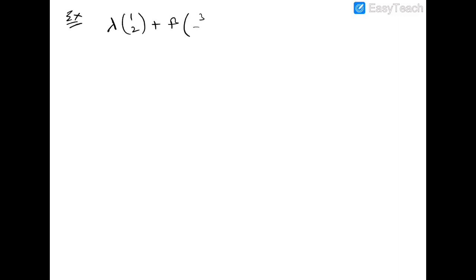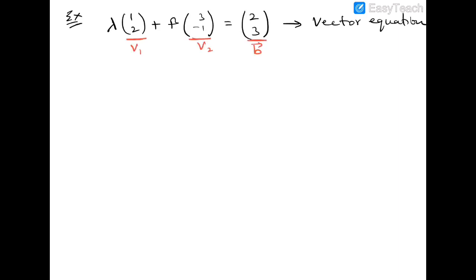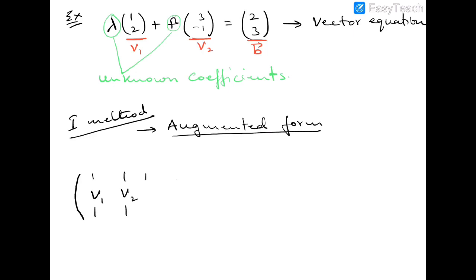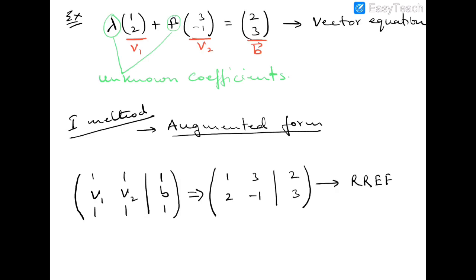Now let's take an example: λ times (1, 2) plus β times (3, −1) equals (2, 3). This is a vector equation where (1, 2) is vector v1, (3, −1) is vector v2, and (2, 3) is vector b. Putting this in augmented form — [v1 | v2 | b] — gives the matrix [1, 3 | 2; 2, −1 | 3], which can be row-reduced to solve.